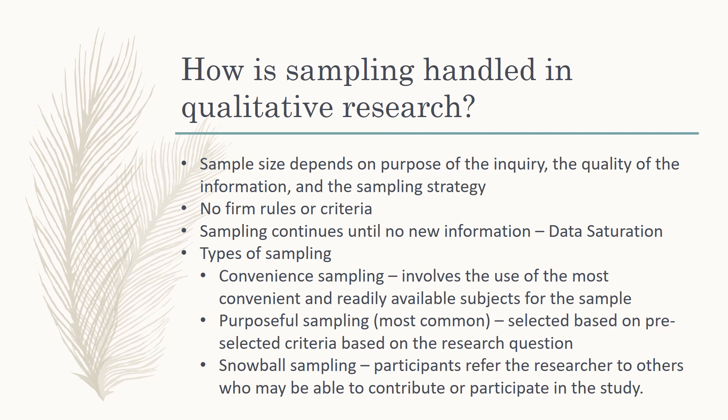There are different sampling methodologies common in qualitative research. Convenience sampling is where you sample just who you have access to — for example, patients in a clinic waiting room. Purposeful sampling is where you have a specific list of criteria based on your research question and seek out people who meet those criteria. Snowball sampling is also common — you ask participants to tell their friends about the study and see if you can interview them too.